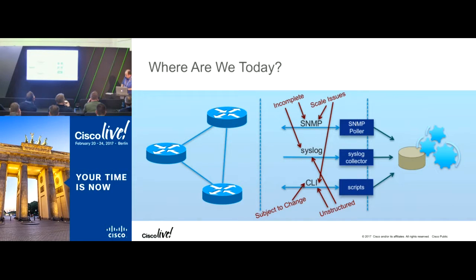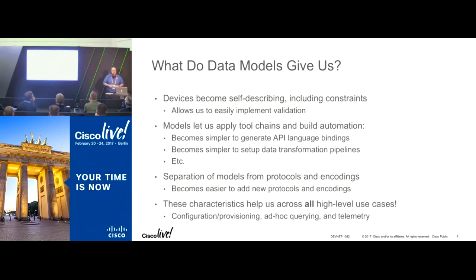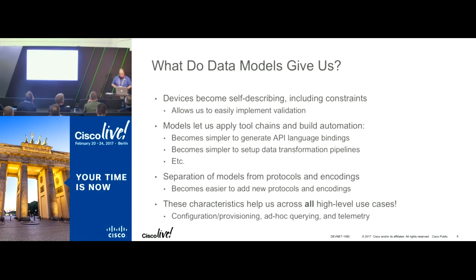So what do data models give us in contrast? As we adopt data models, devices become more self-describing. This includes descriptions of the constraints you can apply to configuration on the box, allowing you to easily implement validation off-box and construct configurations that are valid — something very troublesome when trying to configure via CLI today. Data models let us build very comprehensive tool chains and build up the automation capabilities of network management systems.